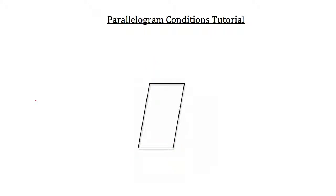Now what if I showed you two diagonals and told you that this one diagonal was cut into two congruent parts? Would this quadrilateral be a parallelogram? No, it wouldn't. Both diagonals would have to be bisected — so this other diagonal would also have to be cut into two congruent parts — and we weren't told that, so this quadrilateral would not be a parallelogram.